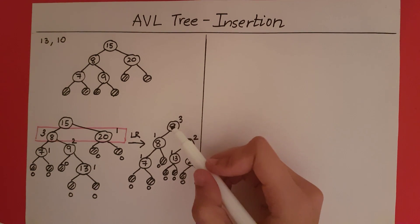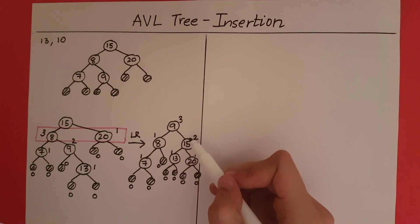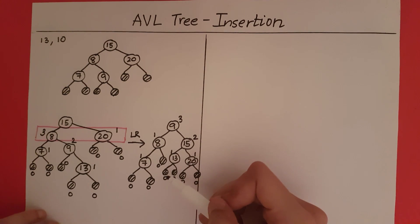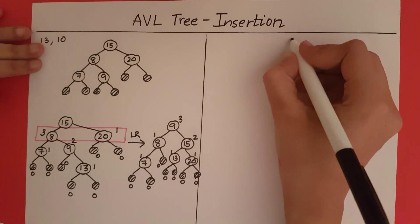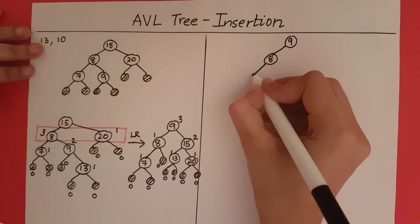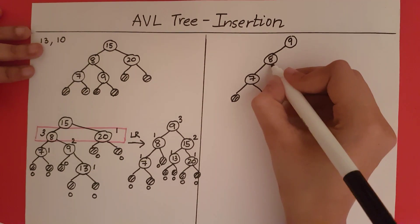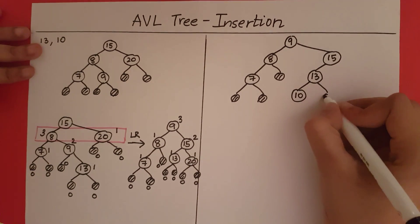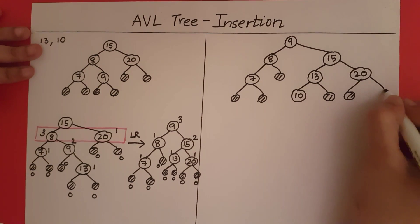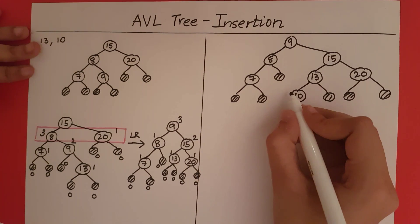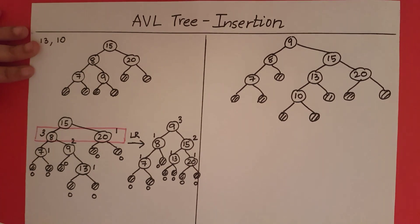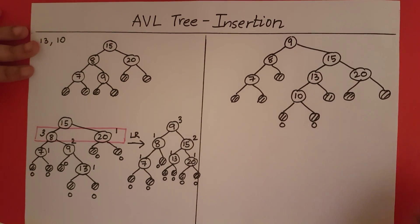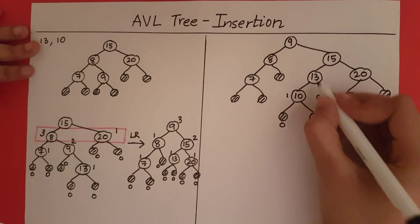Let's add 10. 10 is greater than 9, so it goes right. 10 is less than 15, so it goes left. 10 is less than 13, so it goes to the left of 13. So 10 is added there. Extending 10 with external nodes and checking height differences: external nodes have height 0, 10 has height 1, its sibling external node has height 0, and 13 will have a height of 2.